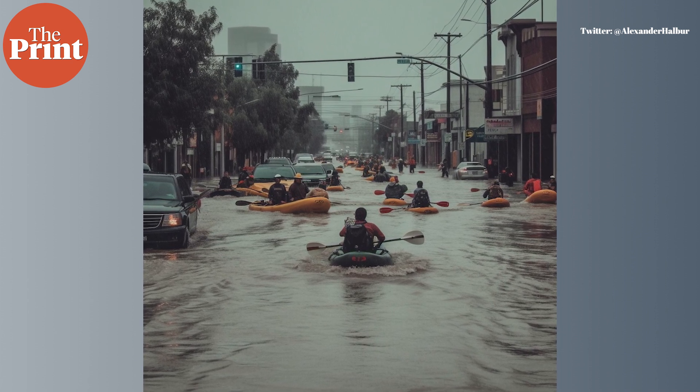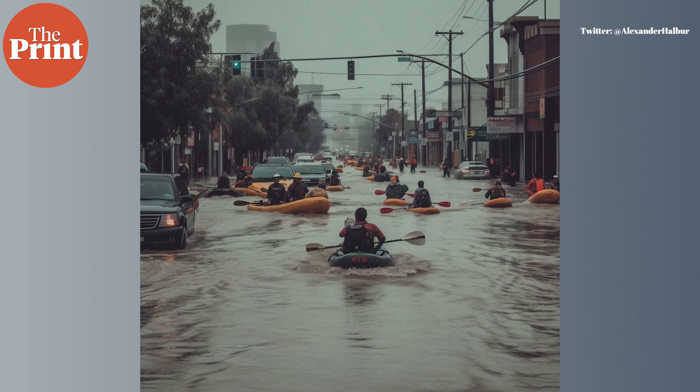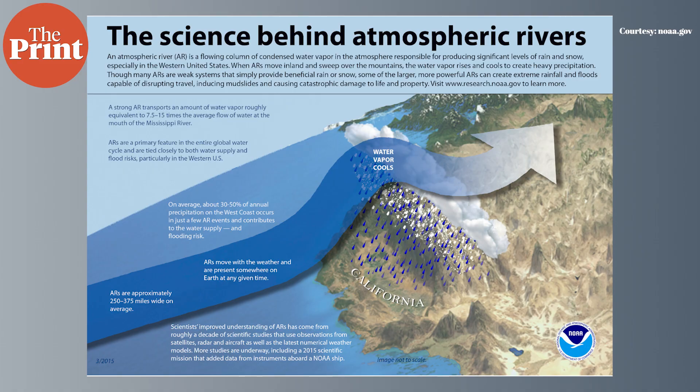This rainfall is said to have been caused by an atmospheric river system, which is a common precipitation system in California. However, meteorologists say that this could be one of the worst storms to hit southern California in 150 years.